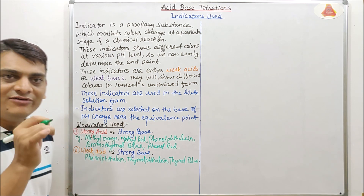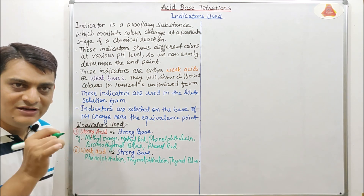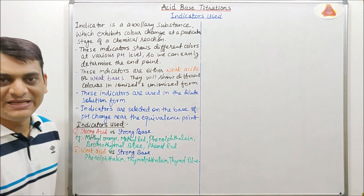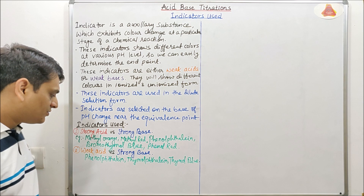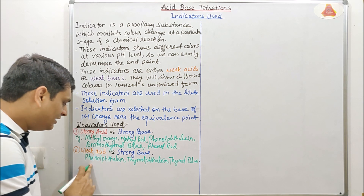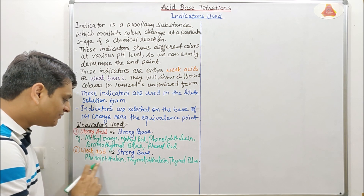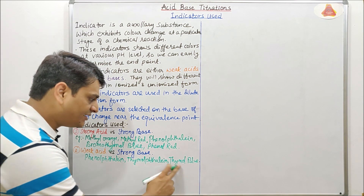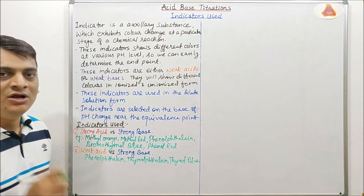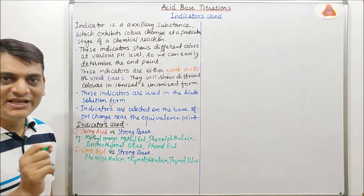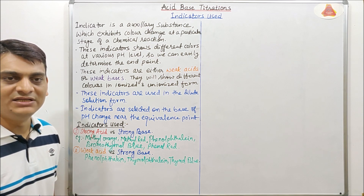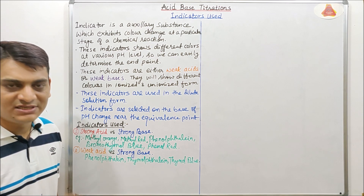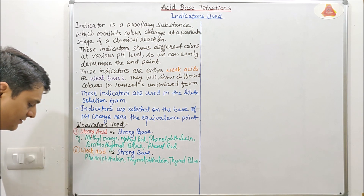In weak acid versus strong base titration, the equivalence point will appear above pH 7. So here, the indicators used are phenolphthalein, thymolphthalein, and thymol blue.